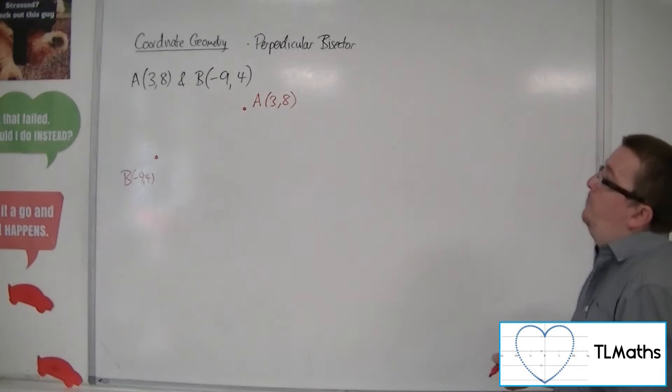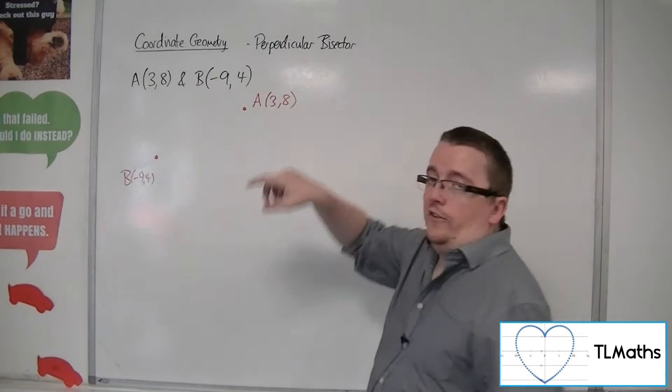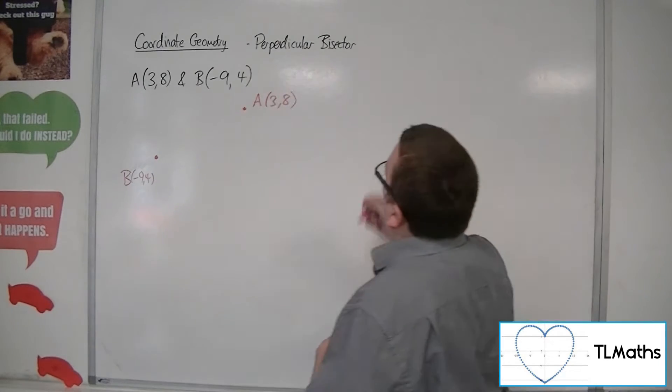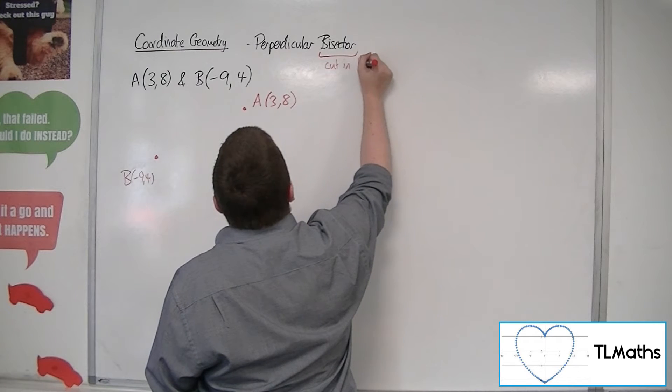So perpendicular bisector. Now this word, the bisector, means to cut in half. So to bisect something, you're going to cut it in half.